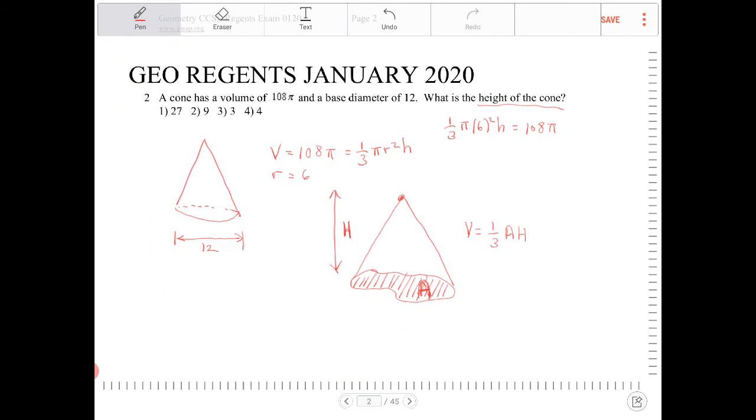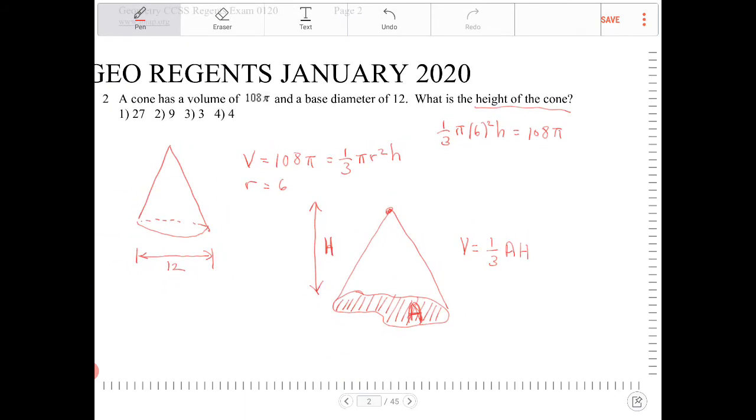And conveniently, there's only one unknown, so I can eliminate things and isolate. I see that I have π's on both sides, I can cross those out. I know that 6² is 36, so I have 1/3 times 36 times h equals 108.